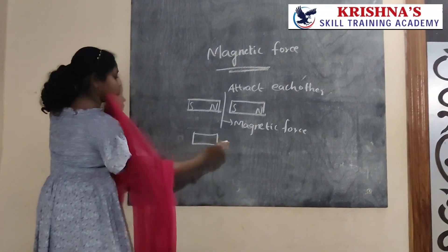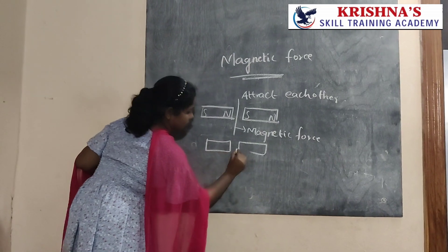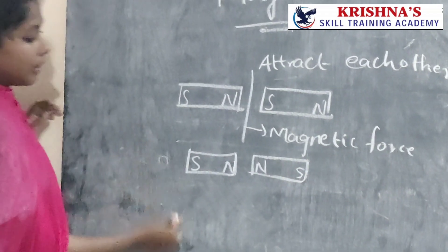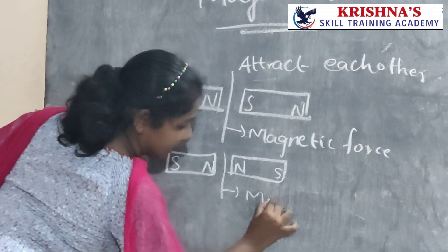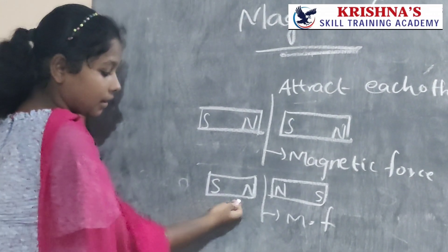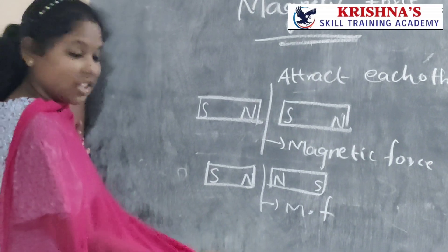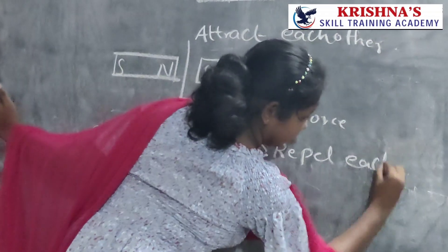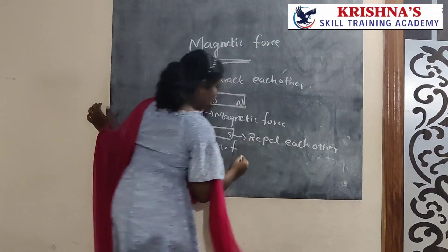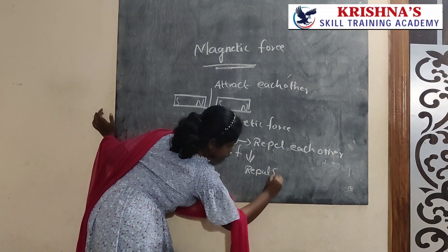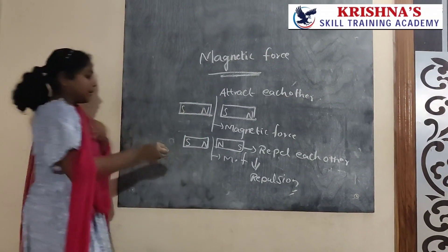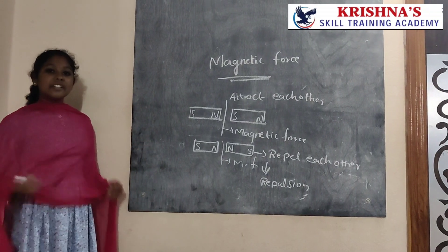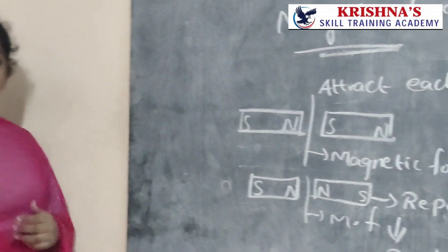Next, if we take two magnets with the same direction or same type of poles, here also a force is applied called magnetic force. But if we try to bring these two same poles together, they will repel each other — this we can call repulsion. By this we can understand that magnets can attract or repel each other. Thank you for giving this great opportunity to say a few words about magnetic force.